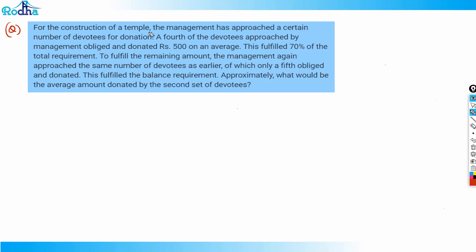In the first case, if the management approached x devotees, then x by 4 devotees — that is, a fourth of the devotees — paid rupees 500 on average, and this filled 70% of the requirement.